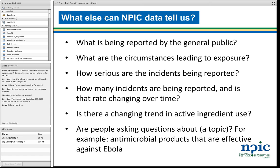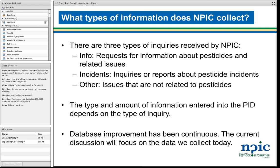Is there a changing trend in active ingredient use? And another example: are people asking questions about a topic? For example, we recently produced reports about questions received related to the Ebola outbreak — specifically, people were asking us about antimicrobial products that may be effective against it. Now, digging into the data we collect, there are three types of inquiries: info, incident, or other. The type of inquiry determines the amount of information we collect.